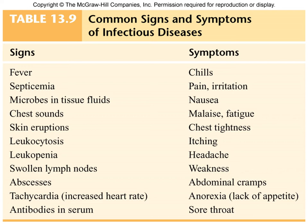This table gives a common list of signs and symptoms. Signs can be measured by the health care provider. Fever — you use a thermometer to measure that. Septicemia — that's microbes multiplying in the blood, in tissues and fluids. Chest sounds, skin eruptions, leukocytosis, leukopenia — a measure of the number of white blood cells; leuko means white. Swollen lymph nodes — you can palpate those. Abscesses, tachycardia which is increased heart rate, and antibodies in the serum. All of these a health care provider can observe.